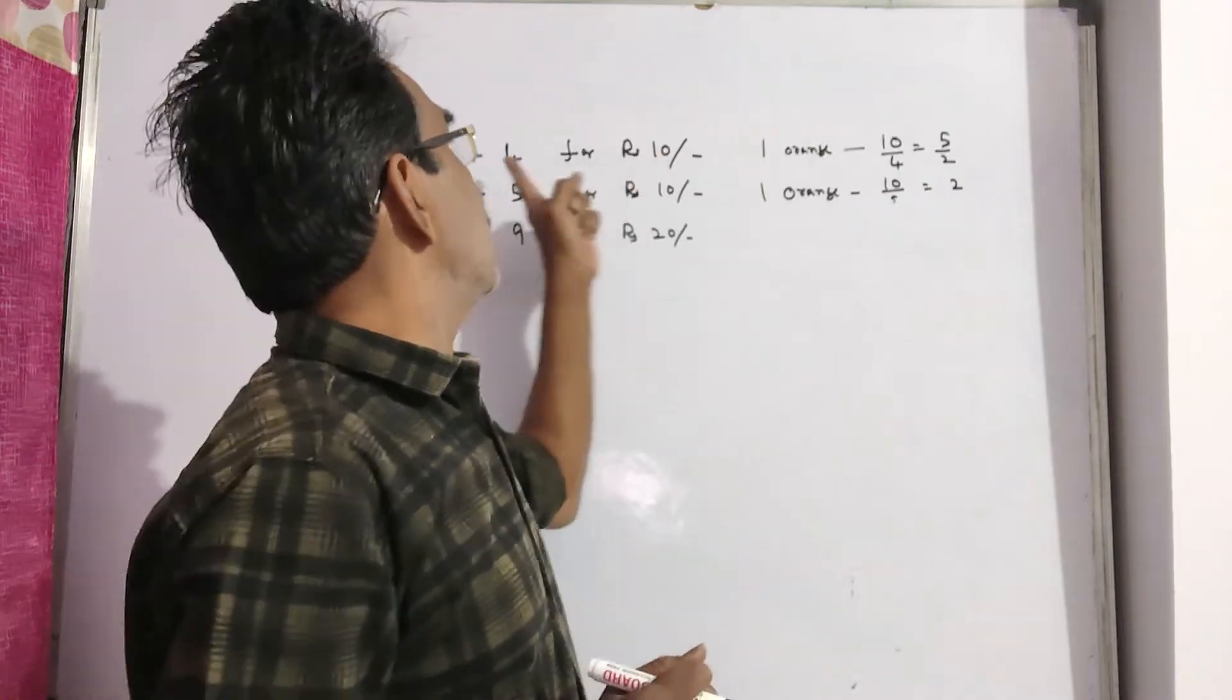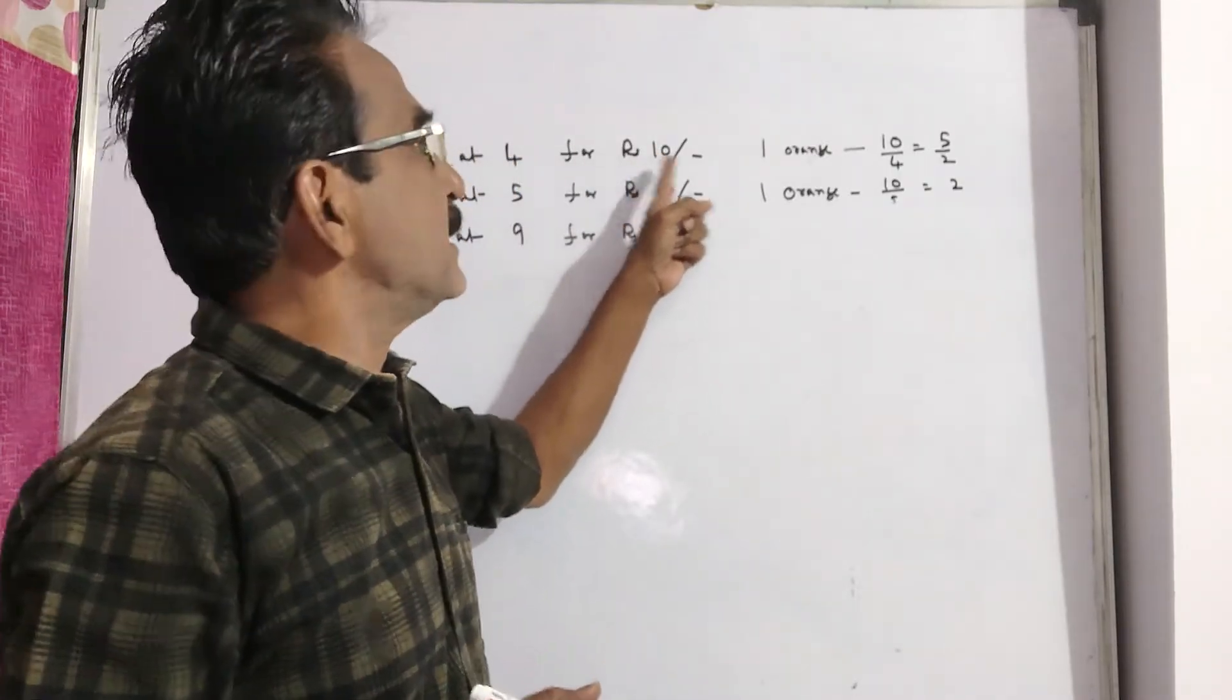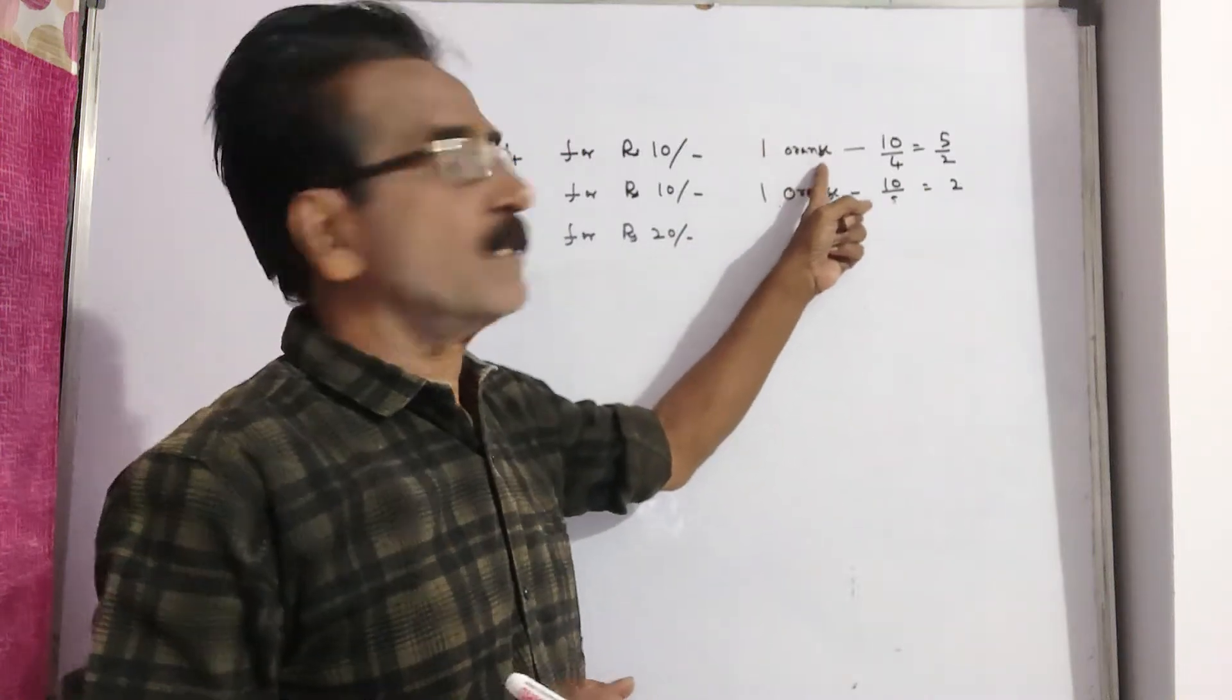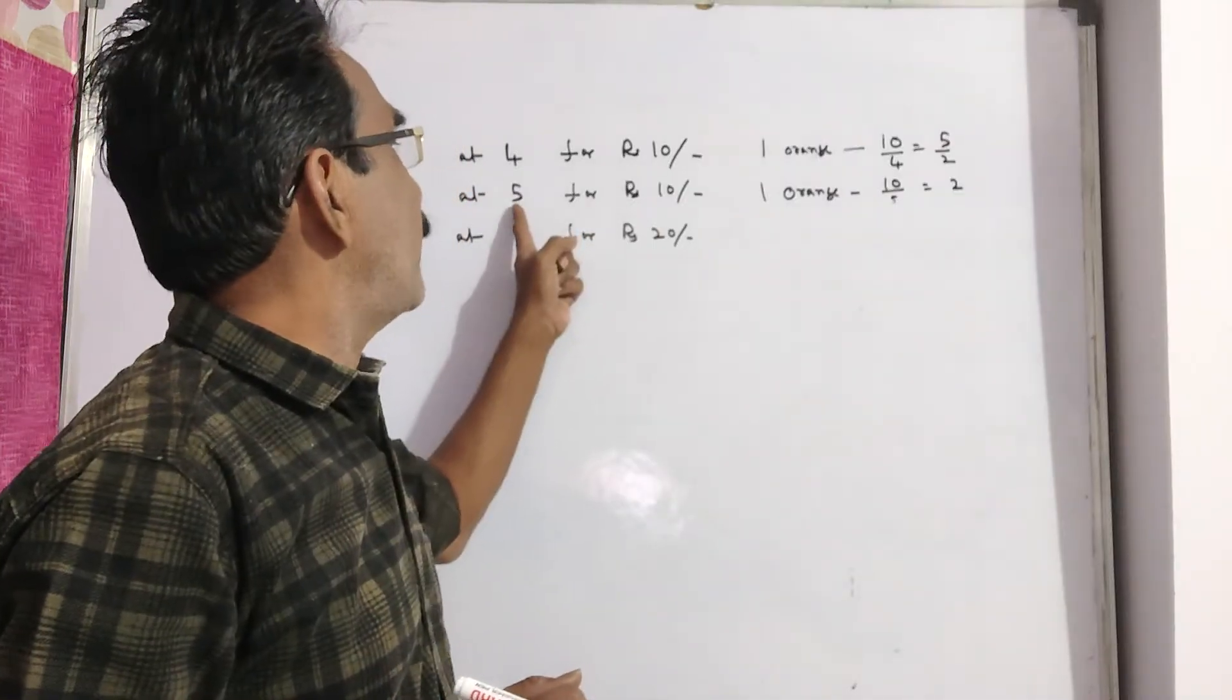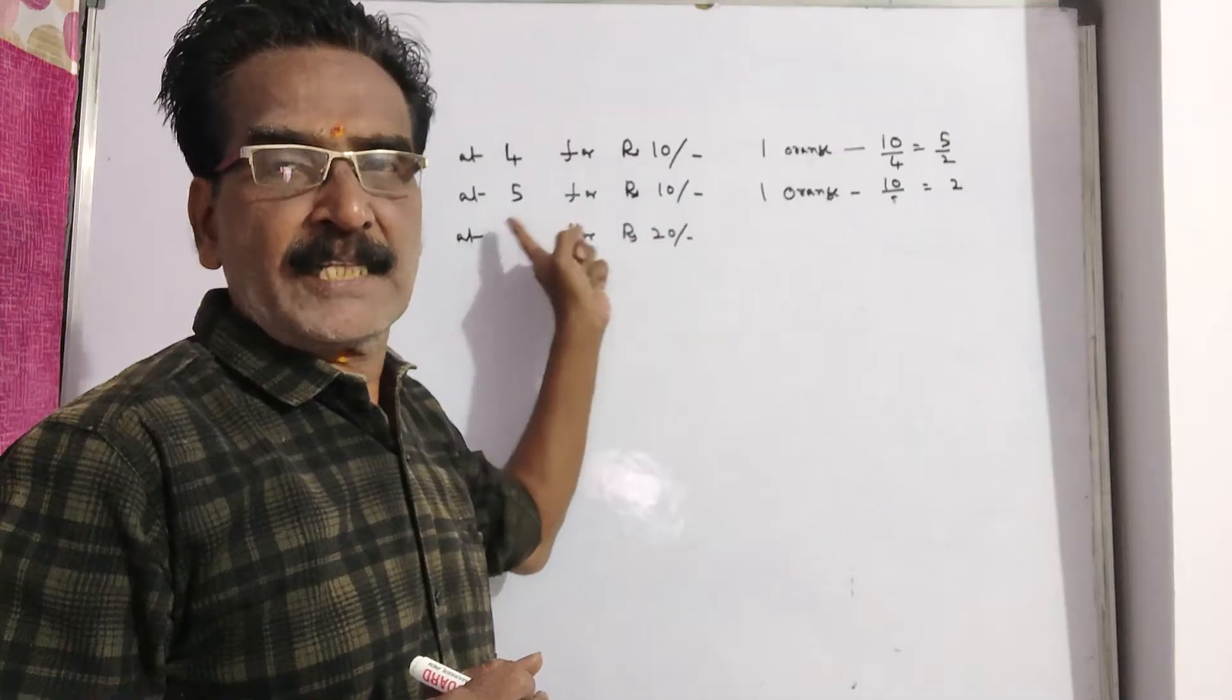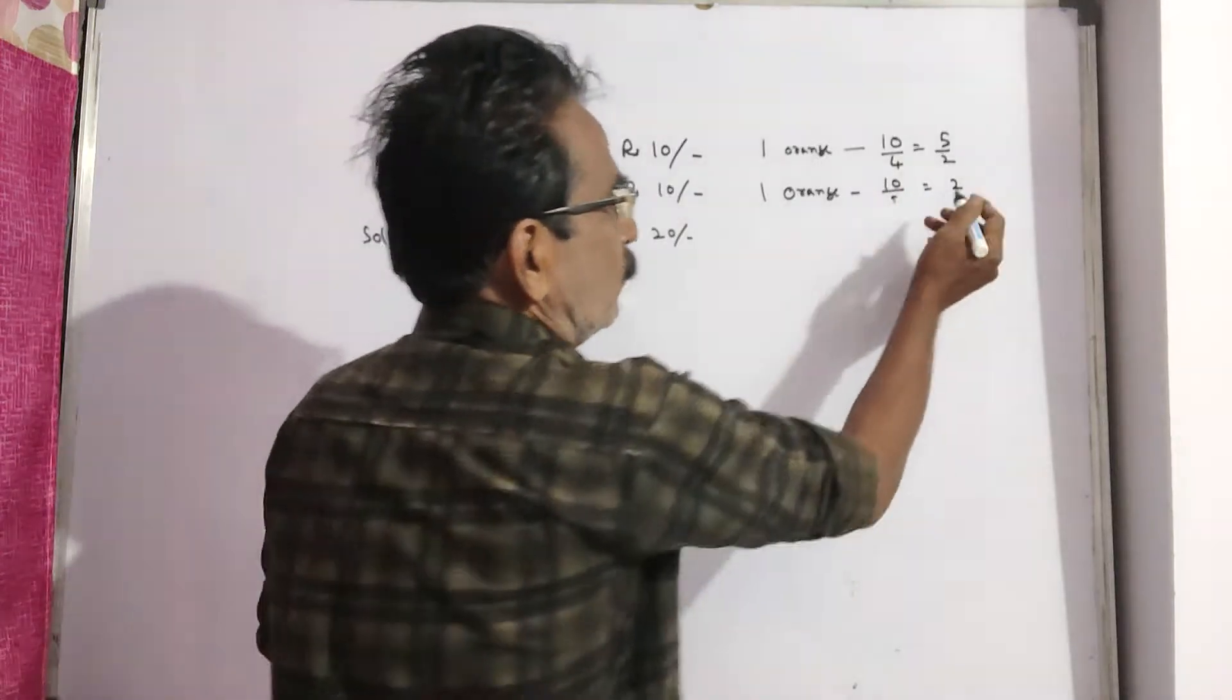See friends, in the first case, he bought 4 for rupees 10 means each orange, 1 orange cost 10 by 4, that is equal to 5 by 2. And in the second case, 5 for rupees 10, 5 oranges for rupees 10 means each orange cost 10 by 5, that is equal to 2.